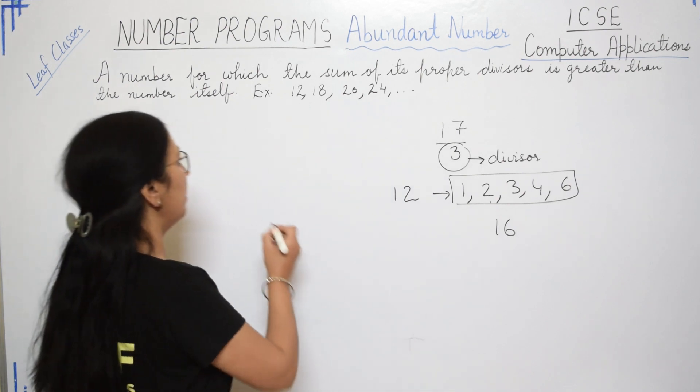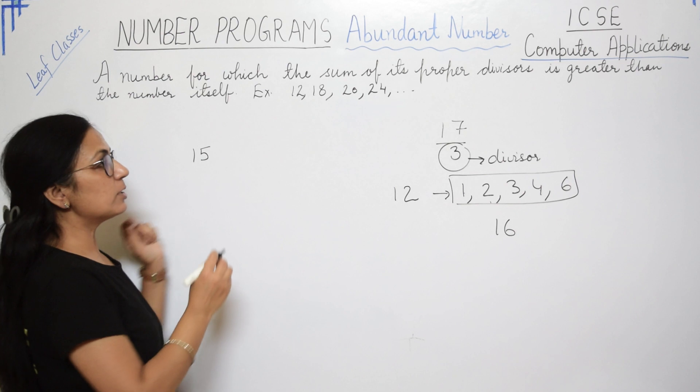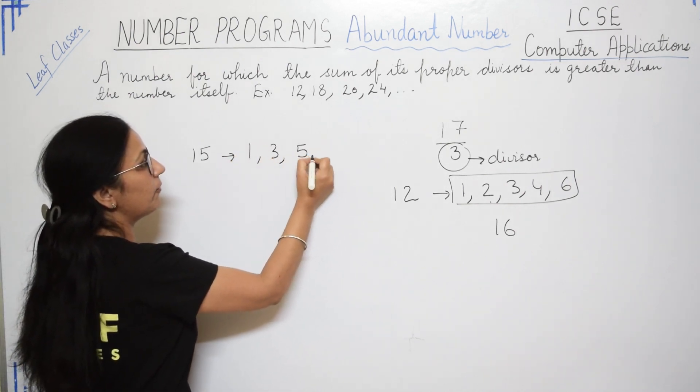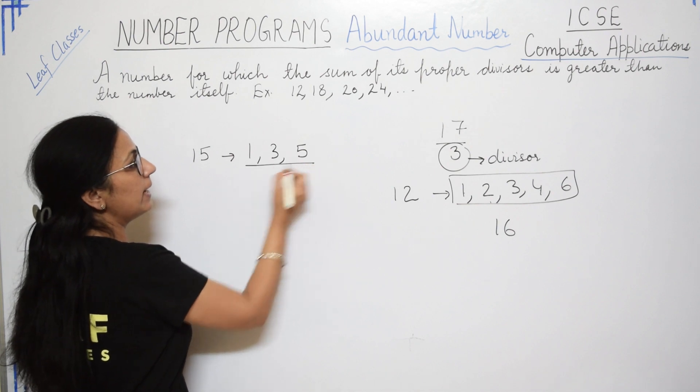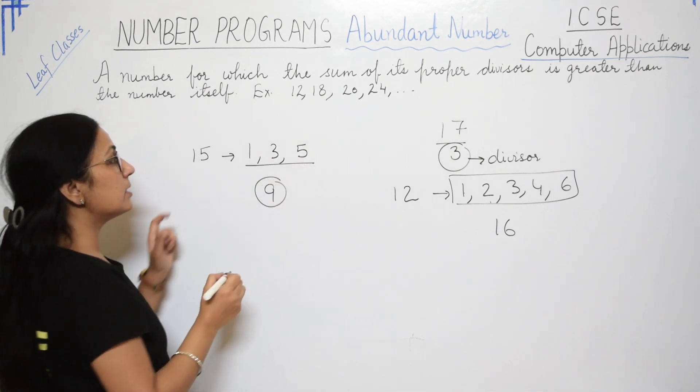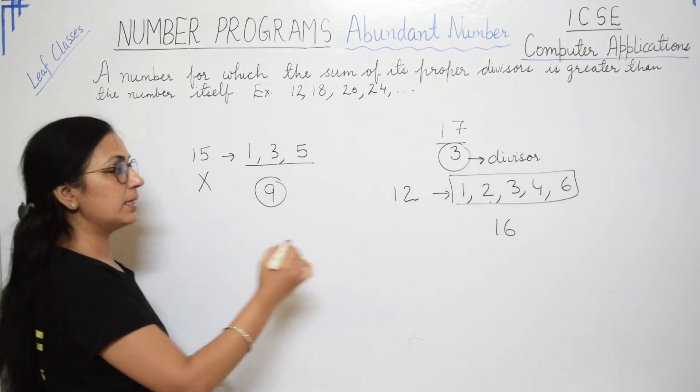Let me take one example of 15. If you take the proper divisors of 15, those will be 1, 3, 5. Now if you will add these, you will get 9.